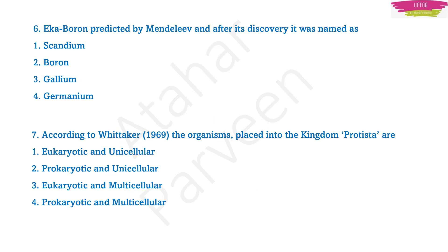Question number six: Eka-boron predicted by Mendeleev — after its discovery it was named as gallium. It was predicted by Mendeleev and later named gallium.